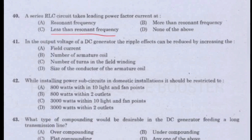Question number 41. In the output voltage of a DC generator, the ripple effect can be reduced by increasing the: Option A - Field current. Option B - Number of armature coils. Option C - Number of turns in the field winding. Option D - Size of the conductor of the armature coil. Answer is Option B: Number of armature coils.